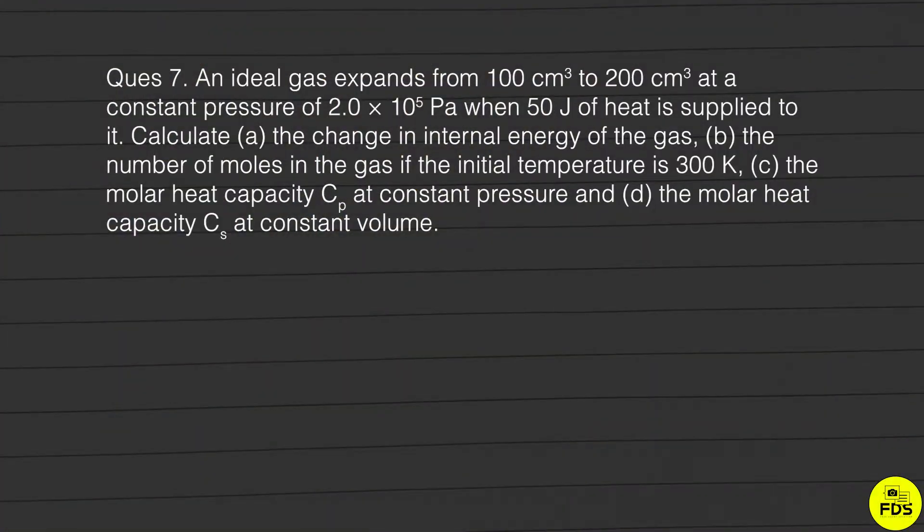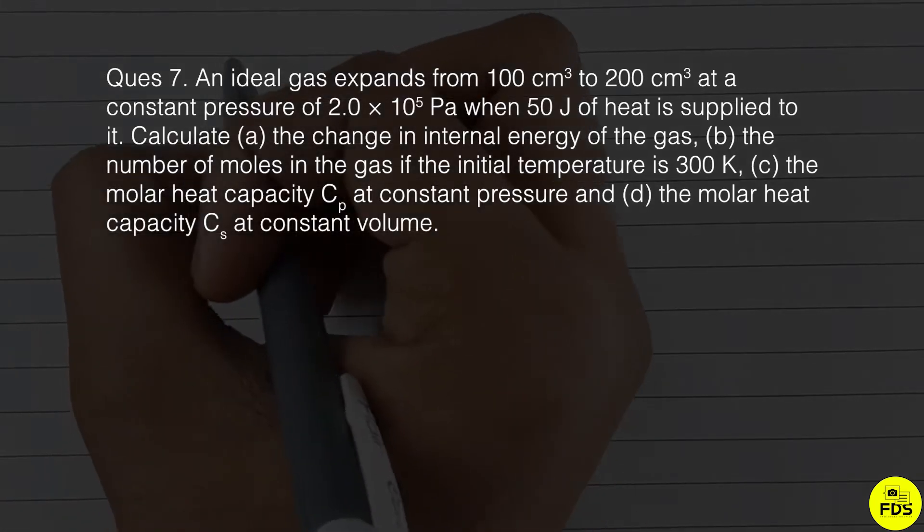We are talking about an ideal gas that expands from 100 centimeter cube to 200 centimeter cube at a constant pressure of 2 into 10 raised to power 5 Pascal when 50 joule of heat is supplied to it.